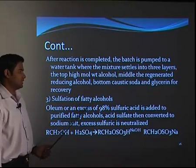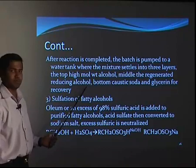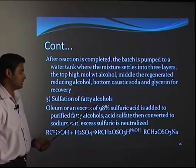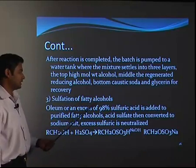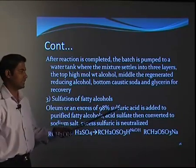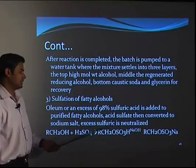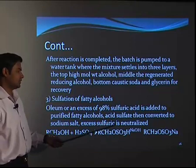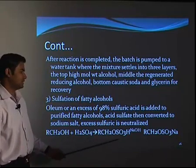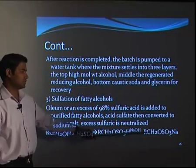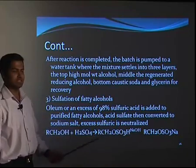In the third step, sulphation of fatty alcohols takes place. The first reaction was reduction, the second produced fatty alcohols, and the third produces sulphates from the fatty alcohols. For that, fatty alcohols are reacted with oleum or excess 98 percent sulphuric acid to give acid sulphates, which are then converted to sodium salts by neutralization with sodium hydroxide. Here the alcohols with sulphuric acid give sulphates which are neutralized to form the detergent — in this case, an anionic detergent.